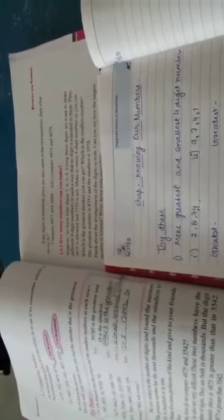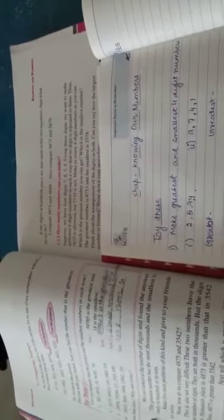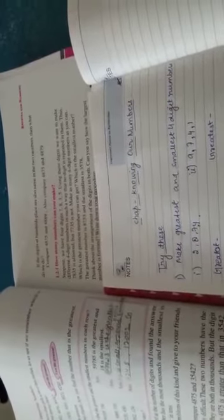In yesterday's class I have taught you the one digit greatest and smallest number, two digit greatest and smallest number, three digit greatest and smallest number and four digits greatest and smallest number. So today we will make the four digit greatest and smallest number by comparing, by using different digits.